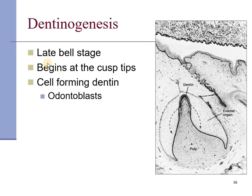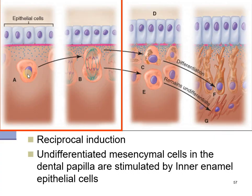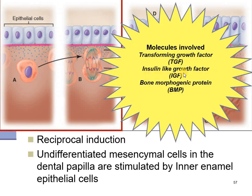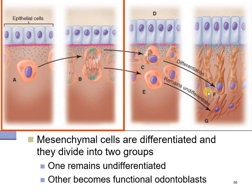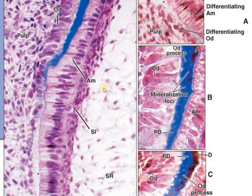Dentinogenesis usually begins in the late bell stage, starting at the cusp tips — first dentine is formed, and in reaction, amelogenesis follows. The odontoblasts, differentiated from dental papilla cells, divide into two dissimilar cells. These precursor cells are obligatory asynchronous dividers: one differentiates to form the odontoblast, whereas the other remains undifferentiated and is one signal short of becoming an odontoblast. Signals which stimulate include transforming growth factor beta, insulin-like growth factor, bone morphogenetic protein, etc. Here, ameloblasts and odontoblasts are visible with mineralization beginning at the interface.